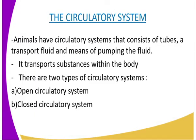On the introduction of the circulatory system, we can say that large and complex animals have a circulatory system that consists of tubes, a transport fluid, and some means of pumping the fluid. A circulatory system transports substances within the body and maintains a steep concentration gradient at the surfaces where diffusion takes place. Such surfaces include the lungs, the gills, and also the gut.